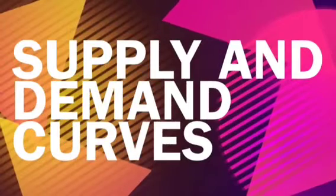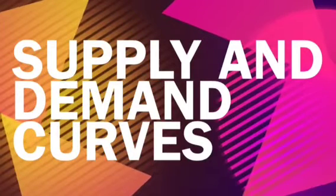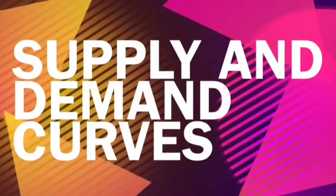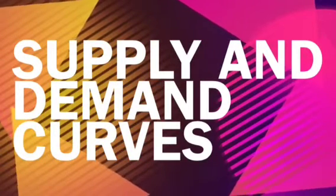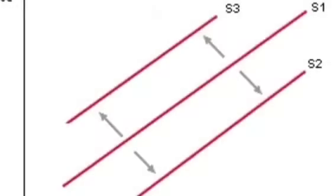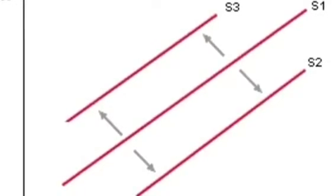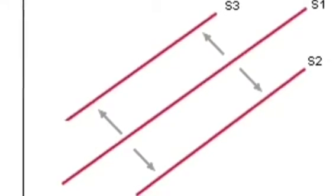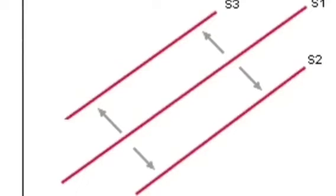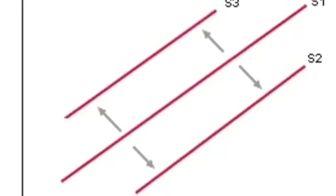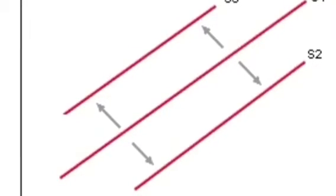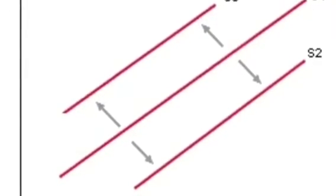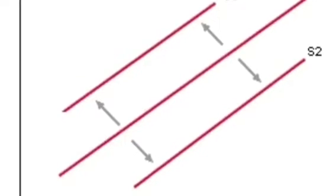Hi guys, in this tutorial I will be looking at supply and demand curves and what causes them to fluctuate. As shown above, here is a typical supply curve and there are various reasons why a supply curve will shift to the right.